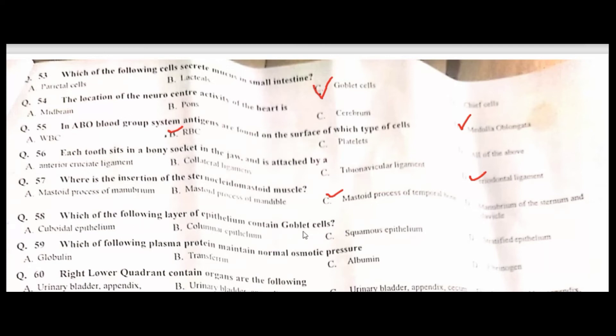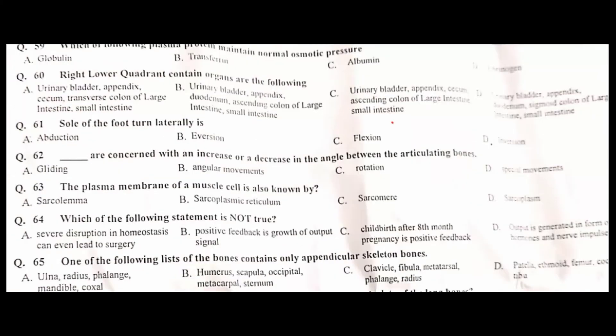The layer of epithelium that contains goblet cells is columnar epithelium — B is the correct option. The plasma protein that maintains normal osmotic pressure is albumin — C is the correct option.